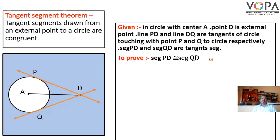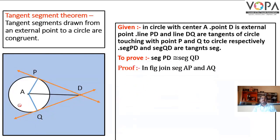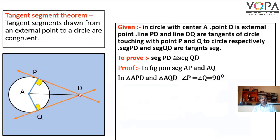Proof of this theorem. In the figure, join segment AP and segment AQ. Therefore, in triangle APD and triangle AQD, angle P is congruent to angle Q, each equal to 90 degrees. Angle P and Q are 90 degrees because the tangent is perpendicular to the radius at the point of contact.